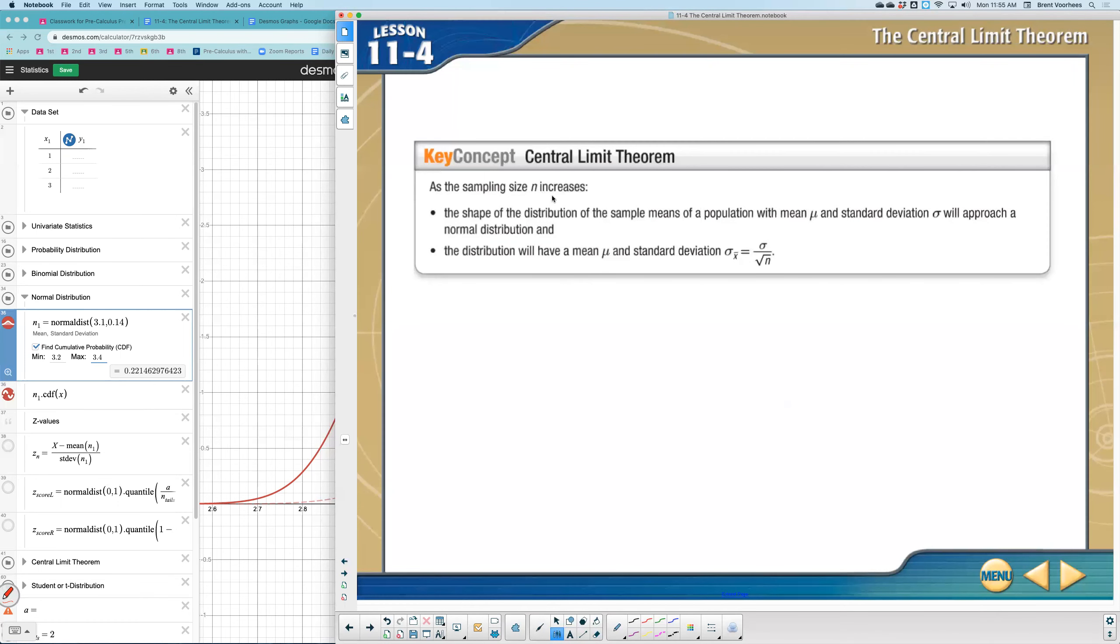As we start getting many samples, the shape of the distribution, the sample means, and the standard deviation will approach a normal distribution. As sample size increases, it will become more and more normalized.